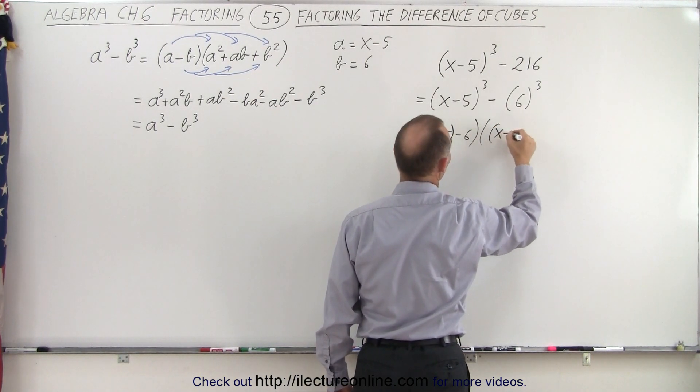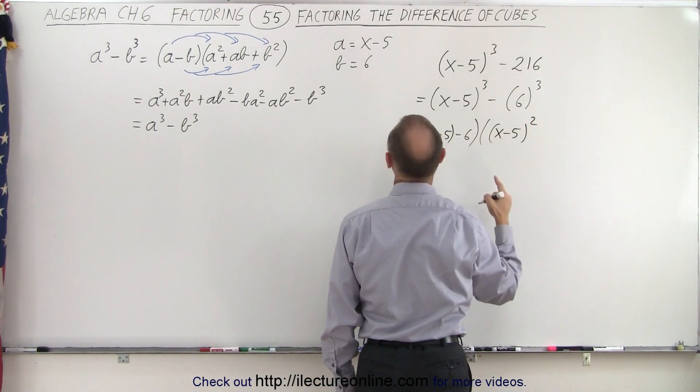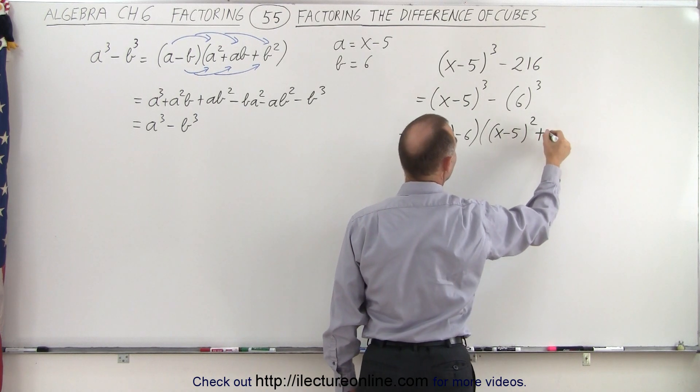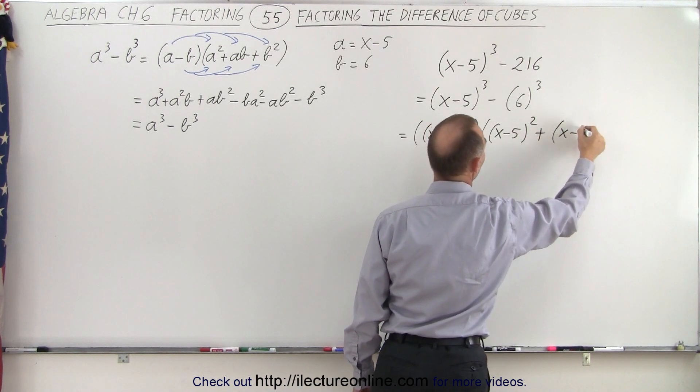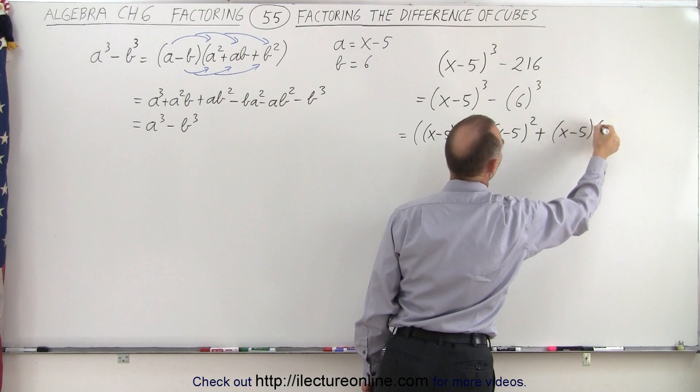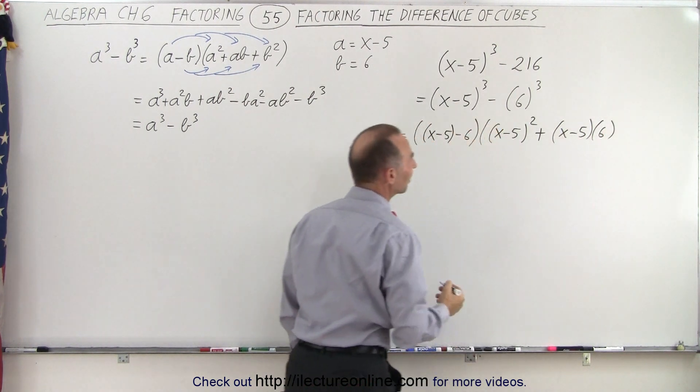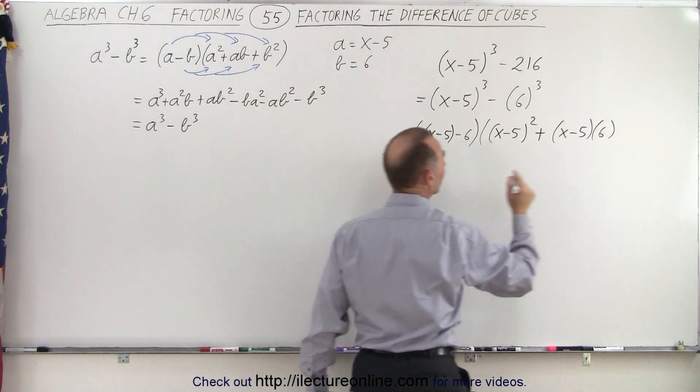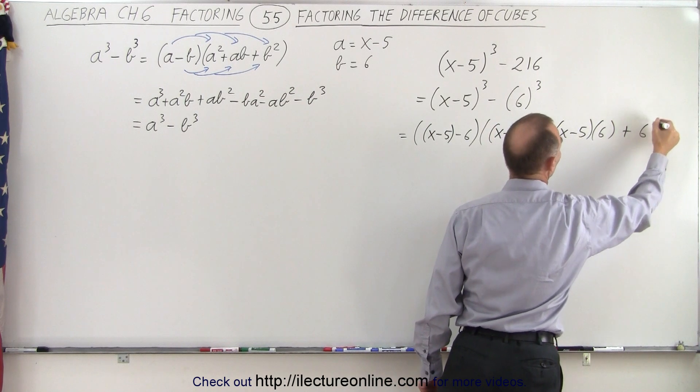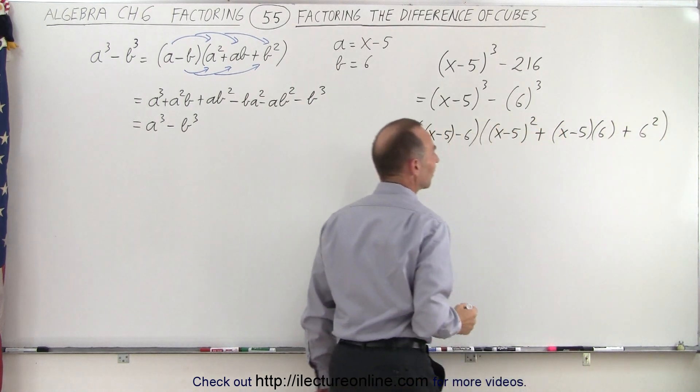And we multiply that times the quantity a squared, so in this case a is x minus 5 squared, then we write plus a times b, x minus 5 represents a, and b is represented by 6, and finally b squared, so plus 6 squared, like that.